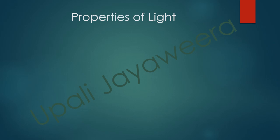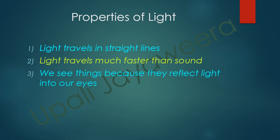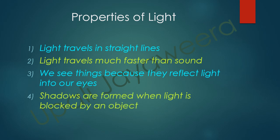The properties of light are: light travels in straight lines; light travels much faster than sound; we see things because they reflect light into our eyes; and shadows are formed when light is blocked by an object.